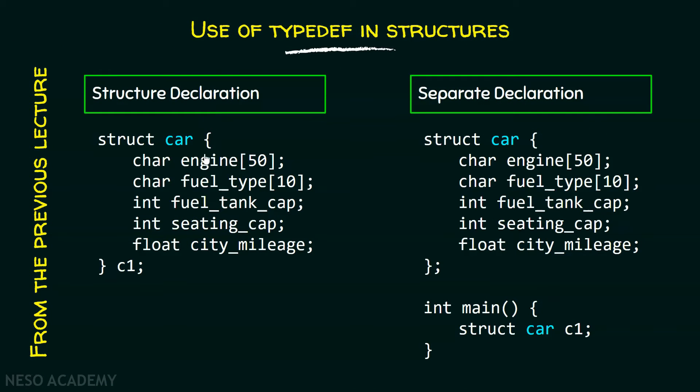This is what we have learned in the previous lecture. This is the way we can declare a type of the structure using structure tag. This is the structure tag and this is actually helping us to declare a variable within the local scope. A variable can be declared in the global scope or in the local scope. It totally depends on us.